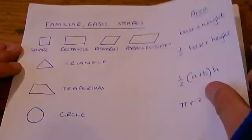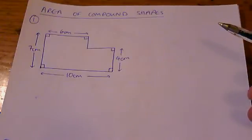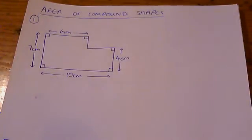But if we look for example at this shape, this is not one of those on that list. It's not a rectangle because it's not got four sides. It's not a triangle or a trapezium or a circle. It's a sort of strange shape made up of other bits.